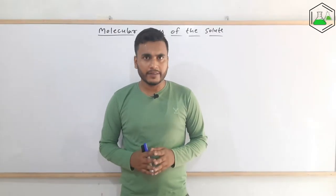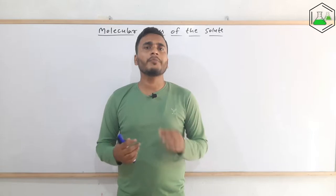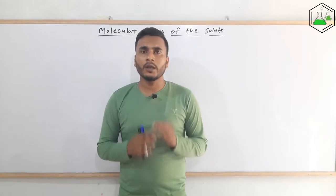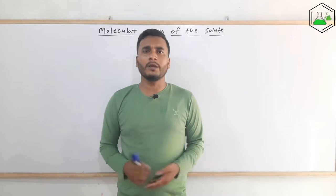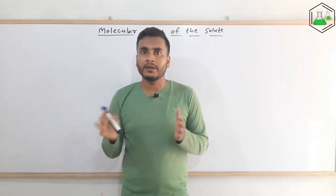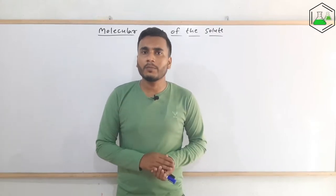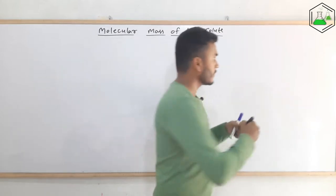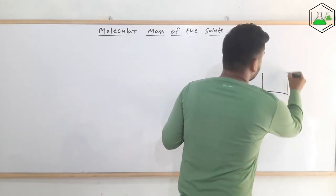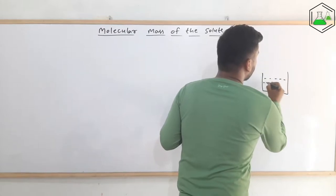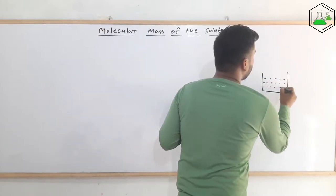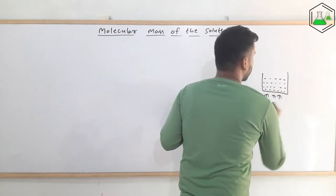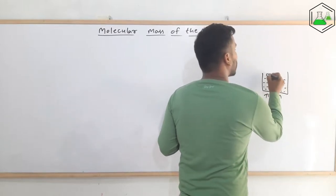Before understanding the derivation part, we must have the knowledge of some important terms. The first one is the boiling point. Boiling point is the temperature at which the vapor pressure of the solution becomes equal to the atmospheric pressure. Suppose this is a liquid kept in a vessel — what will happen if we heat it? Obviously it will start to form vapor.